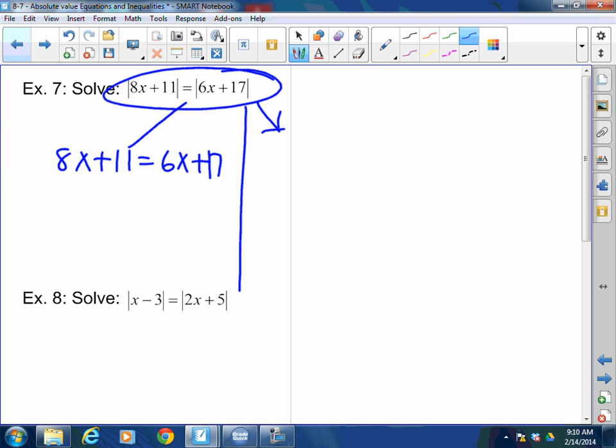And real quick, the negative side, choose one of them to make negative. So the positive is the same, but on the negative side, I'm going to leave 8x + 11 alone. Distribute a negative to everything in the second absolute value, making it -x - 17.